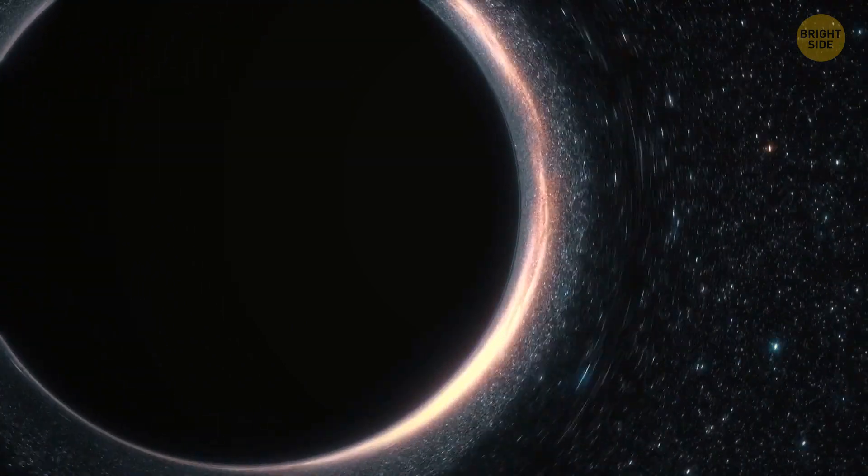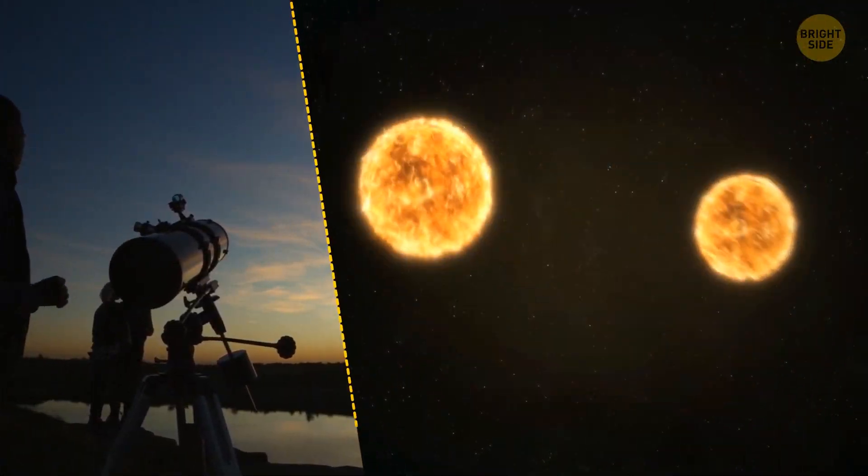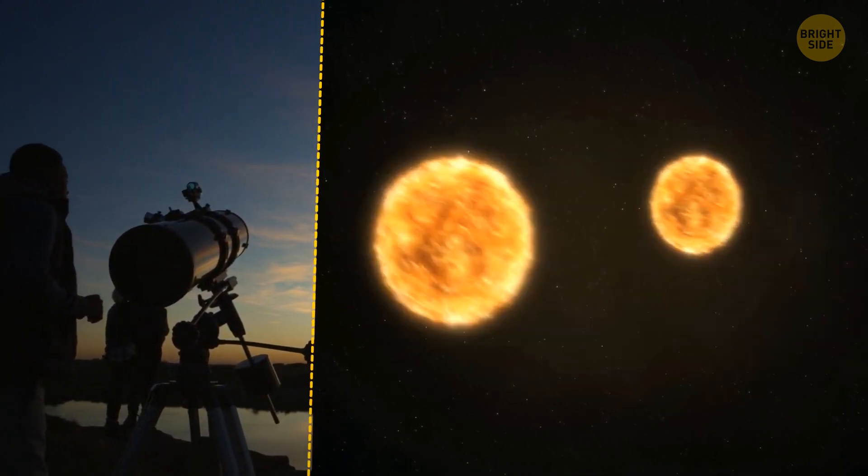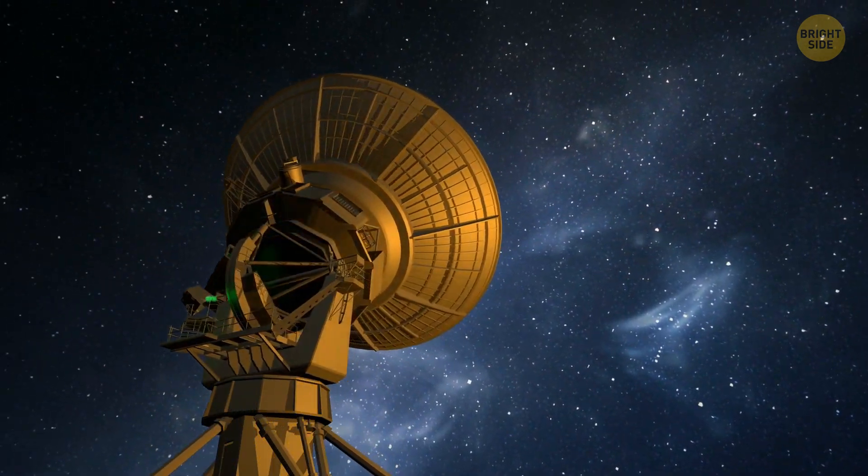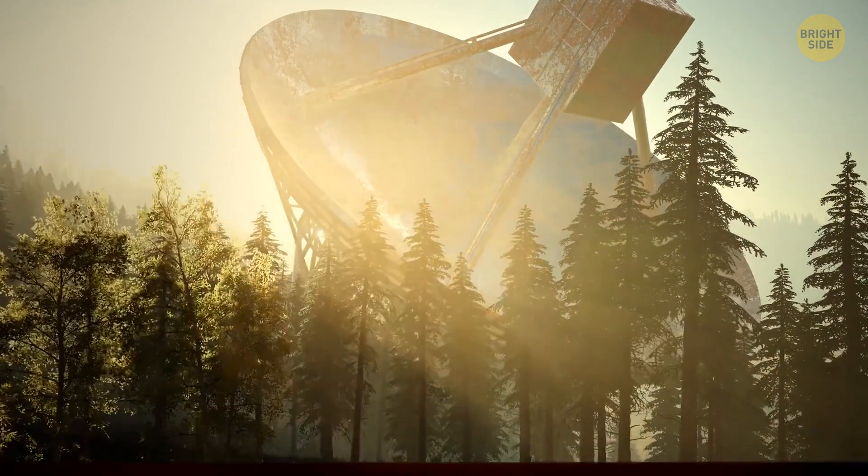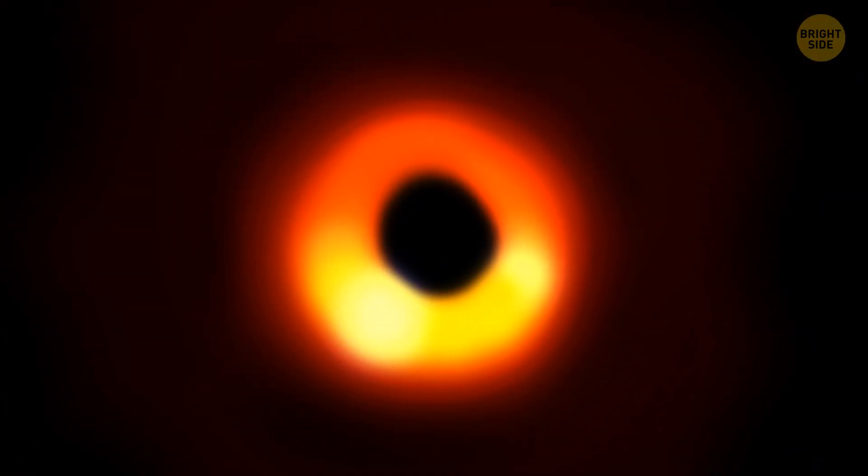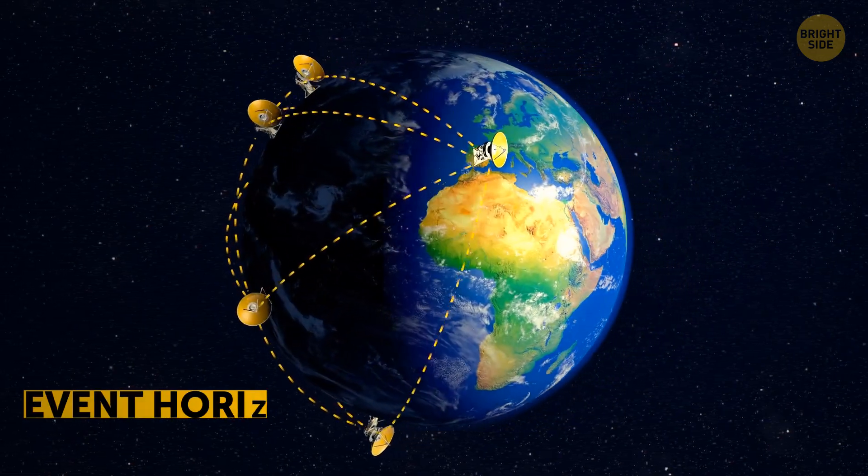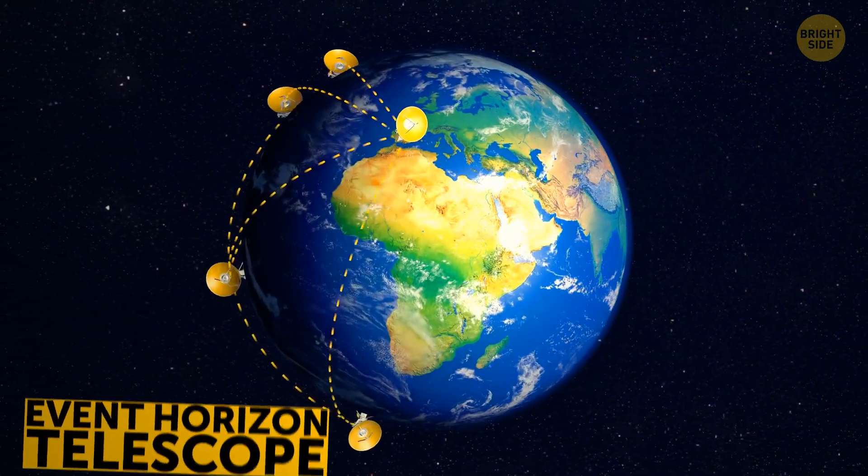You can't see a black hole directly because it doesn't give off any light. Scientists used to be able to only spot them by what they were doing to their surroundings. When over 200 scientists around the world worked together, they managed to take the first pictures of that space oddity. The equipment they used, added together, would be the power of a telescope the size of Earth.